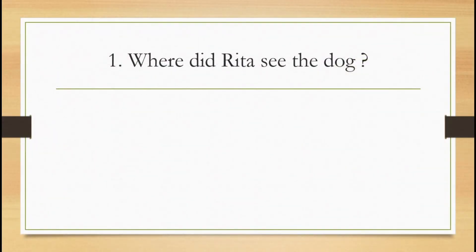Question number 1. Where did Rita see the dog? Rita ne kutte ko kaha dekha? In the middle of a pile of broken boxes. Toote box ke teer ke beach mein.